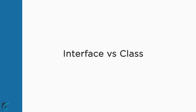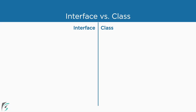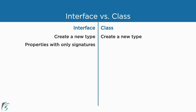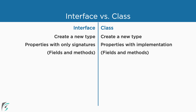Let us start with having a look at the difference between the two. We use both interface and class to create custom types in TypeScript. However, there are significant differences between the two. Interfaces and classes both have properties, which includes the fields and the methods. However, for an interface, we just define the signature of the property — meaning the property just has a name and the type annotation. For the methods, they are just the method signature.